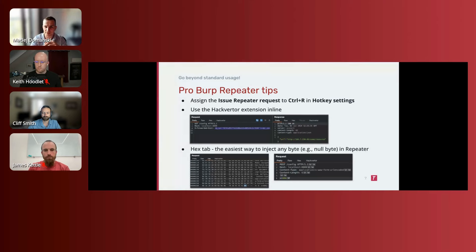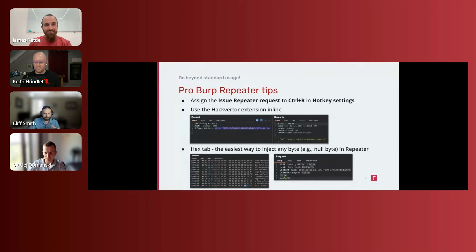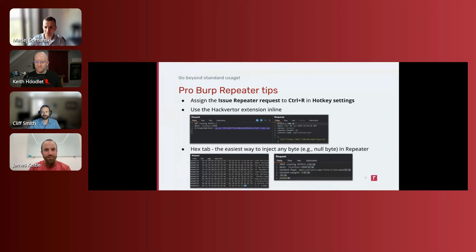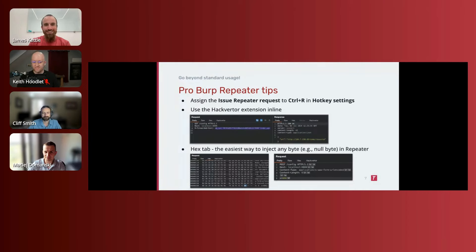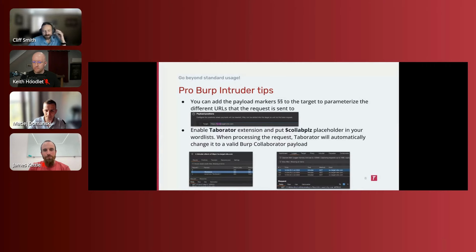James, what are your favorite Repeater features? I love everything about Repeater and often end up with hundreds of Repeater tabs. One thing not well known is that having hundreds of tabs significantly slows down Burp Suite and makes the UI laggy. But we've fixed that — there's a release coming out hopefully later this week which resolves that issue, meaning you can have as many Repeater tabs as you like with no performance issues whatsoever.